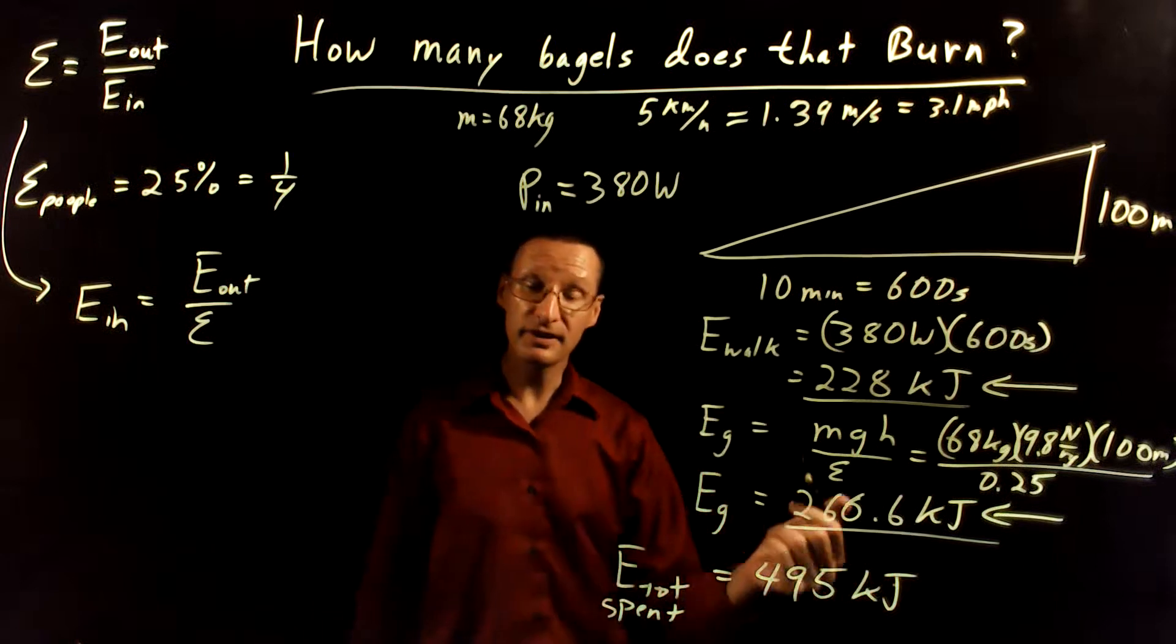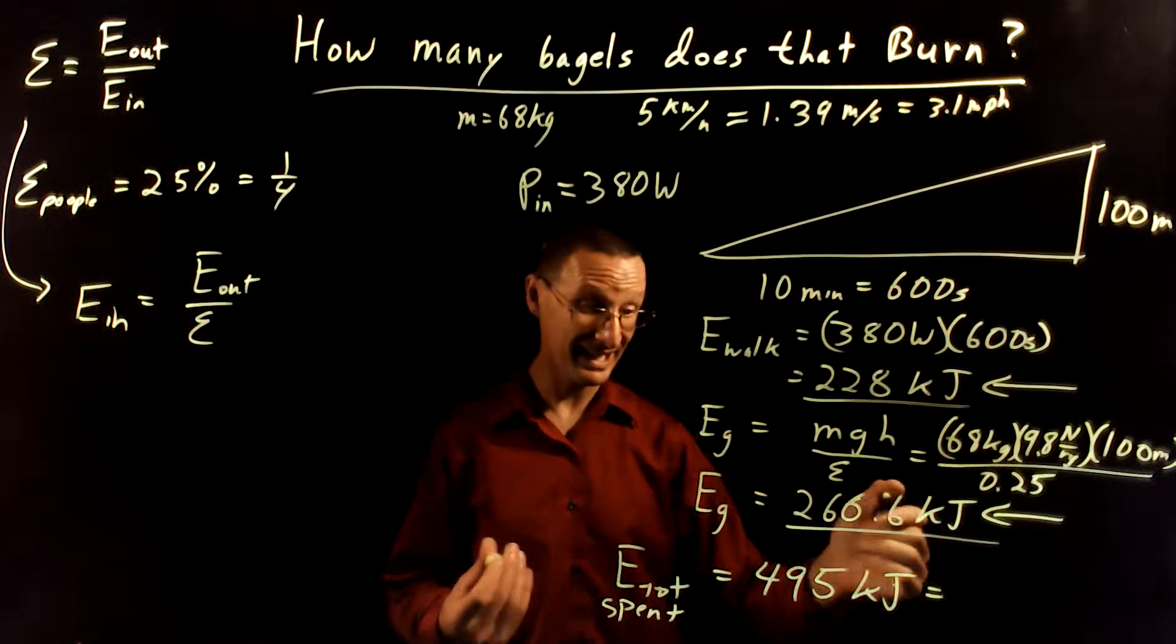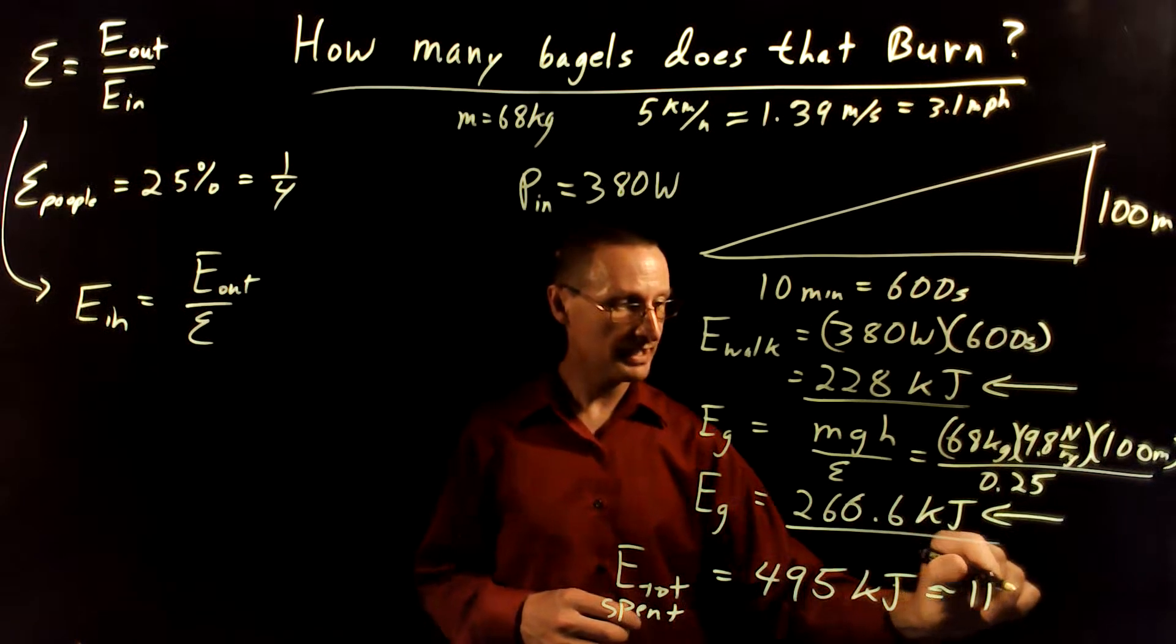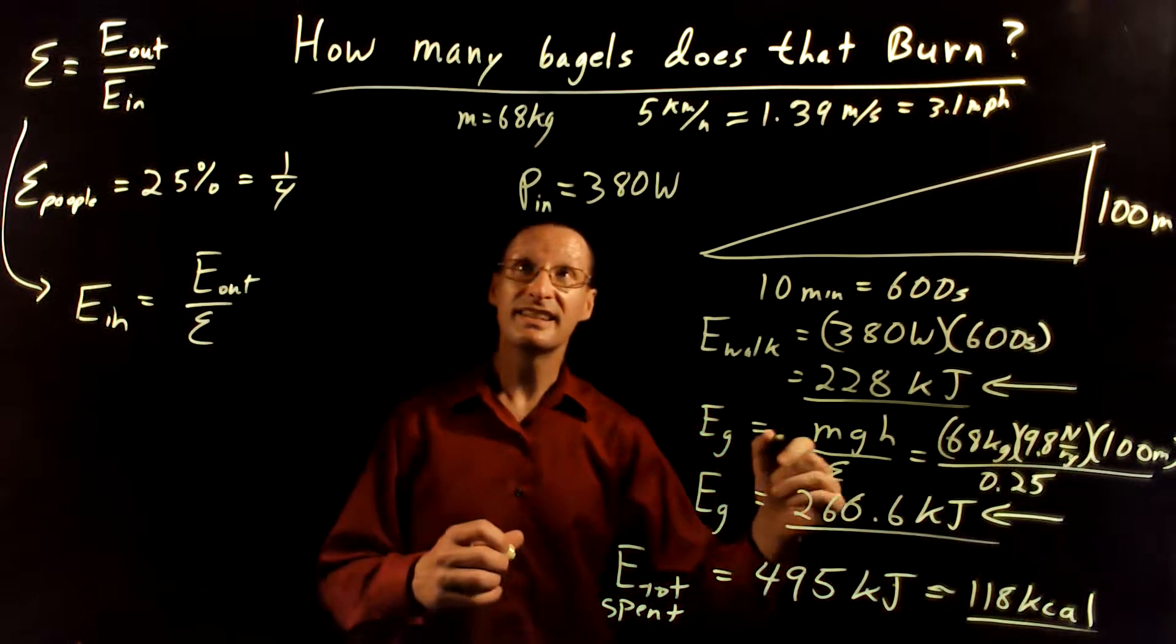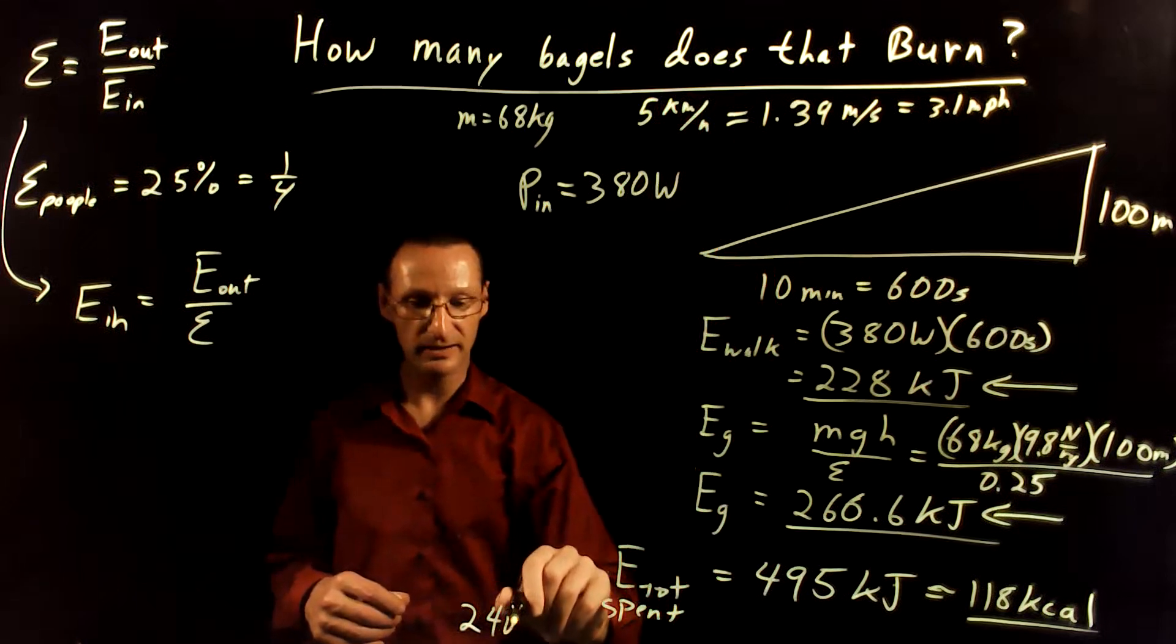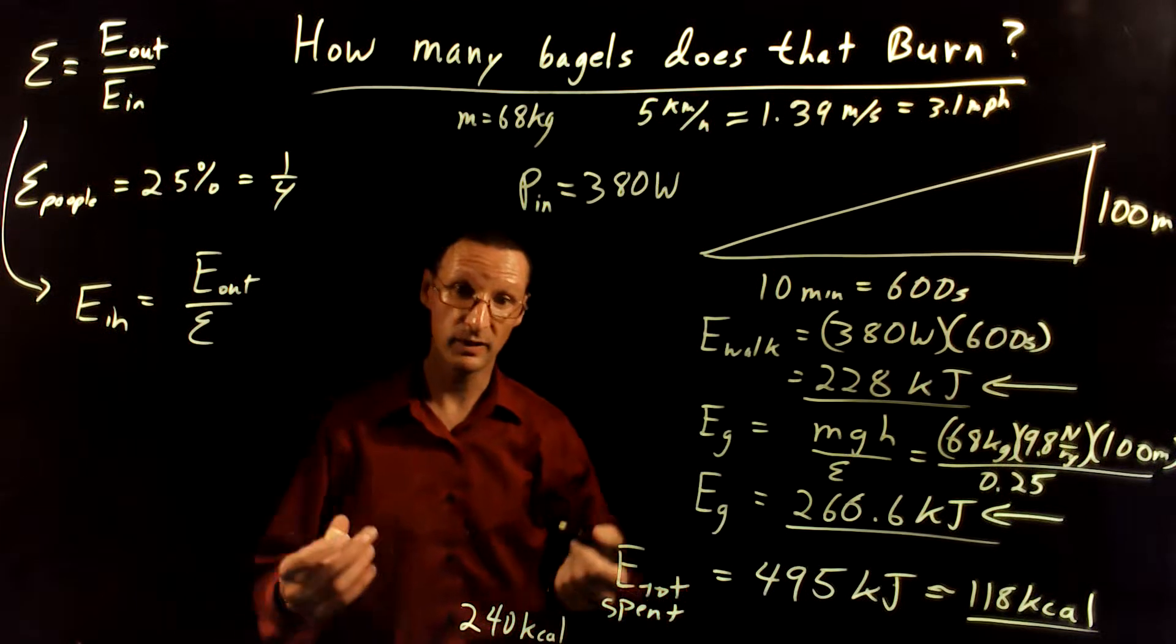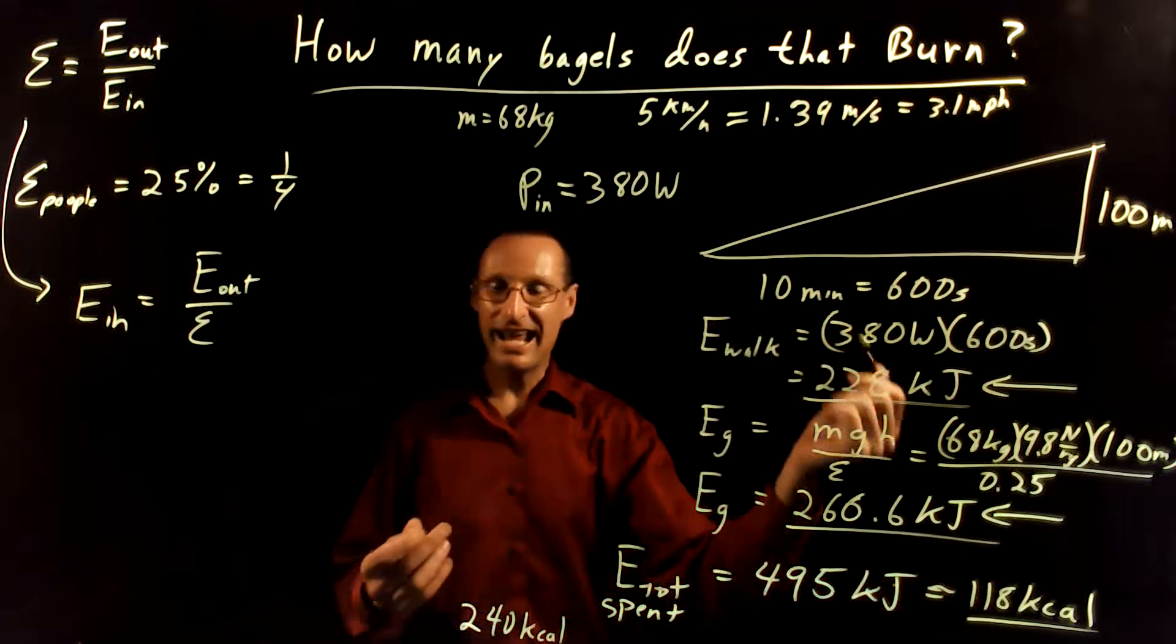Now if we convert this into food calories so we can understand how that plays out with our diet, this is about equal to 118 kilocalories or capital C calories. So to get back to the question, how many bagels is that? A bagel is about, you know, 240 kilocalories or something like that, maybe 300 depending on what you have on it and all that stuff. So this is about a half a bagel.